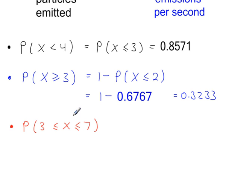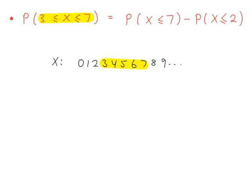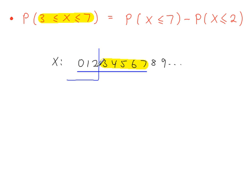To work out P(3 ≤ X ≤ 7), we first find P(X ≤ 7) and subtract P(X ≤ 2). We look up the highest value, 7, and go one below the lowest value, which is 2. This is because looking up 7 includes all probabilities from 0 to 7, and we need to remove the parts for 0, 1, and 2 by subtracting P(X ≤ 2).